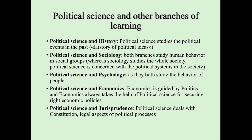And finally, political science and jurisprudence. Political science deals with constitutions and legal aspects of political processes. We see the connection between political science and jurisprudence, for example, while studying the electoral process, while studying the constitution and other legal documents.